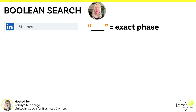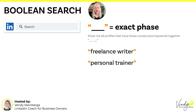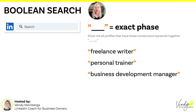Then we have the exact phrase search, which uses quotation marks around your keywords. Typically, if you're searching for more than one word, you would put it in quotation marks. You're telling LinkedIn, show me all profiles that have these consecutive keywords together in this order. For example, "freelance writer" — these two keywords must be together in this specific order. "Personal trainer" — same thing. "Business development manager" — you're telling LinkedIn these three keywords must be in this exact order, because that's what I'm searching for.